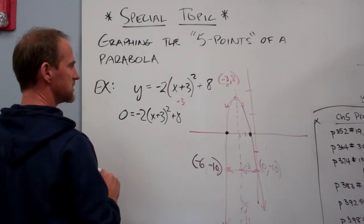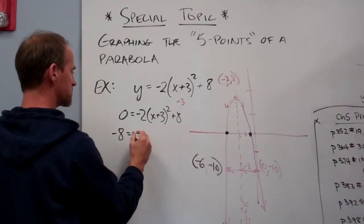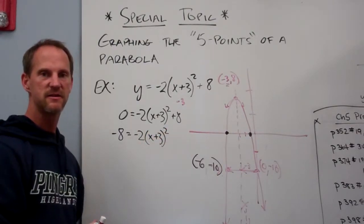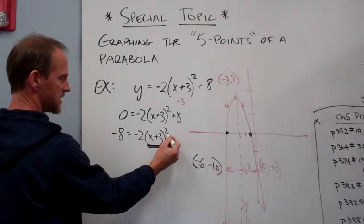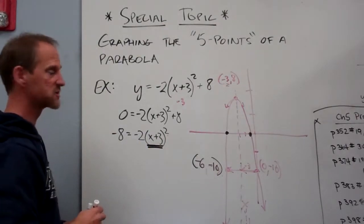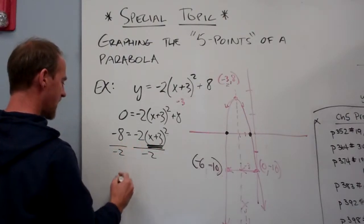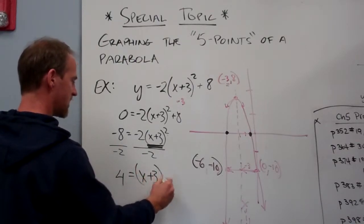I subtract 8 from both sides. I get minus 8 equals minus 2 x plus 3 squared. I then divide both sides by negative 2. We're trying to isolate the parentheses that's getting squared. So I divide both sides by negative 2.